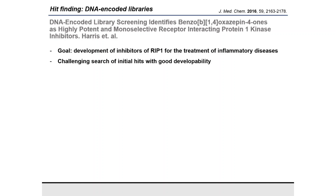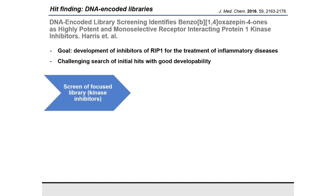The case study paper is 'DNA-Encoded Library Screening Identifies Benzyl-1,4-oxazapinones as Highly Potent and Monoselective Receptor-Interacting Protein-1 Kinase Inhibitors' by Harris et al. in J. Med. Chem. 2016. Their goal was to develop inhibitors of RIP1 for the treatment of inflammatory diseases. This drug discovery process was performed at GSK. Initially, they screened a focused library of kinase inhibitors and found a hit, which they developed further — however, they couldn't advance it to preclinical studies due to poor developability: high molecular weight, high logP, and poor solubility.